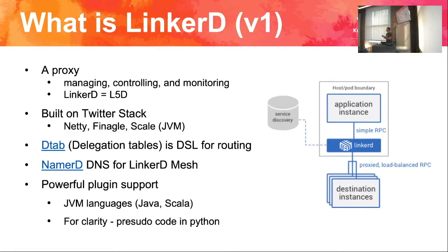At that point I actually started a project called Traffic Control. Linkerd V1 has a very powerful DSL for routing. You can literally make the linkage between any two points programmable. You can say: for 50% of traffic going to chat service, go to chat V1; the other 50% go to chat V2. You can control something like that.